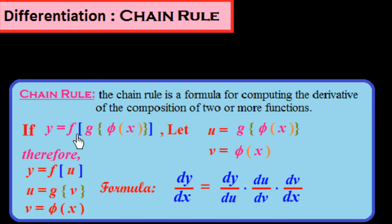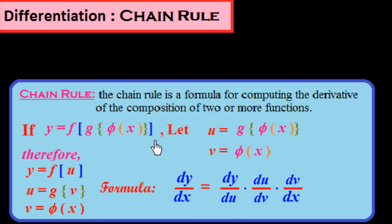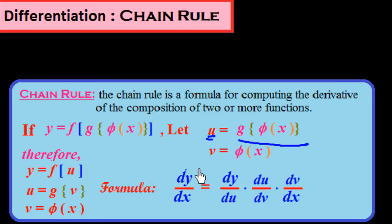First I would like to explain the procedure of how we solve this. In the first sub-function g of phi of x, we assume u. So u is equal to g of phi of x, and for the second sub-function phi of x we assume v, so v is equal to phi of x. Therefore y is equal to f of u, because g of phi of x equals u. We put u instead of g of phi of x. So u is equal to g of v, and finally v is equal to phi of x.